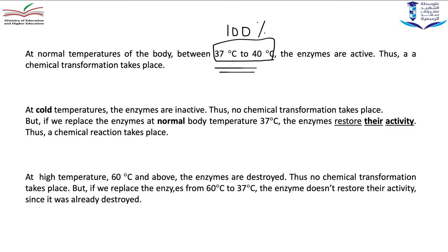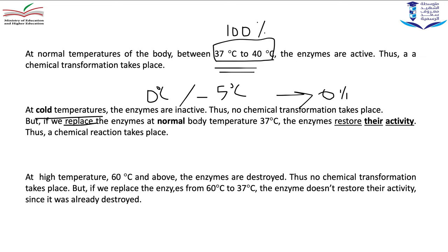At cold temperatures like 0, minus 5, minus 10 degrees Celsius, there is no chemical transformation because the enzymatic activity is zero — the enzymes won't work, they're frozen. However, if we place the enzymes back at normal body temperature of 37 degrees Celsius, the enzyme restores its activity and digestion will occur again.